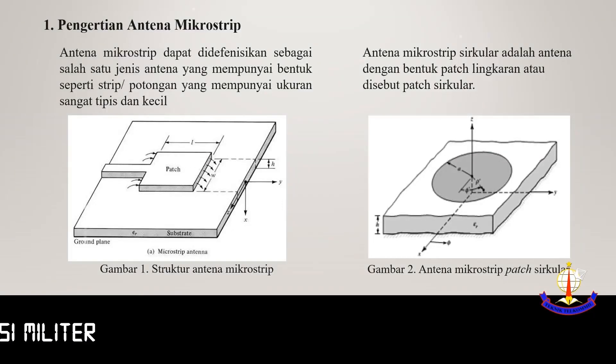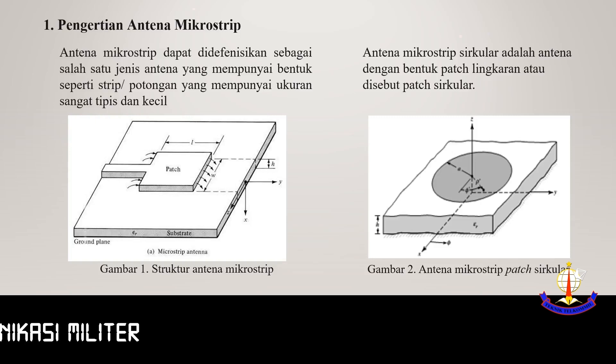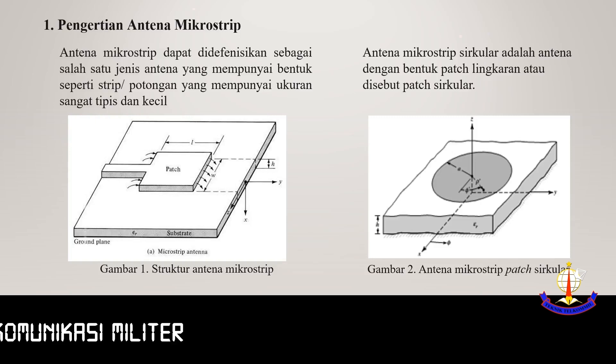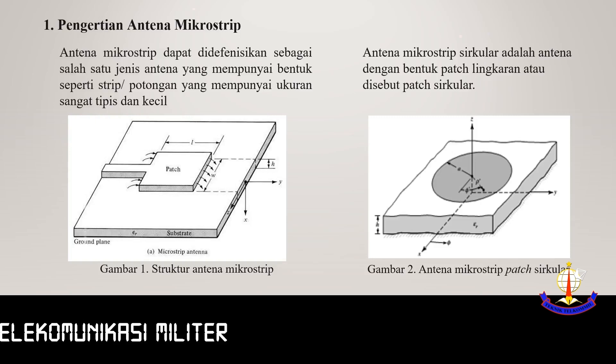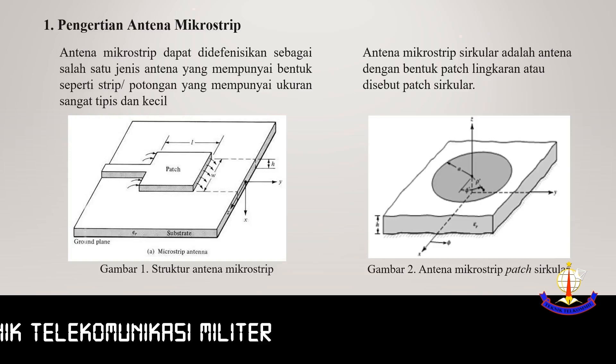Antena microstrip adalah salah satu jenis antena yang mempunyai bentuk seperti strip atau potongan yang mempunyai ukuran sangat tipis dan kecil. (A microstrip antenna is a type of antenna shaped like a strip or patch that is very thin and small.)